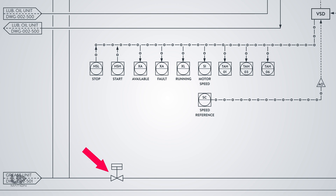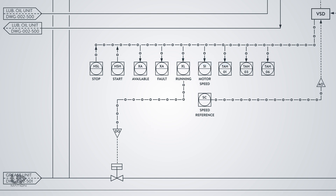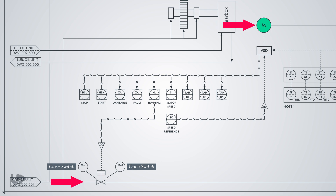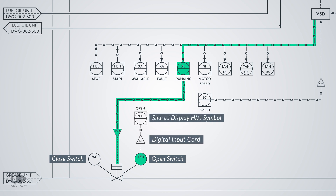Now let's talk about the solenoid valve which opens or closes the grease supply to the bearings of the ball mill. The PLC programmer should write the program to link the opening or closing of this valve to the status of the electric motor, so the PLC logic will open the valve via a digital output card. To know if the valve has executed the open and close commands, it should have open and close switches mounted on its actuator. Upon starting the motor, the grease valve opens and its signal is transferred to the HMI via a PLC digital input card. The same will happen when the motor turns off and the valve closes. I used bubbles for the switches as they are field-mounted.